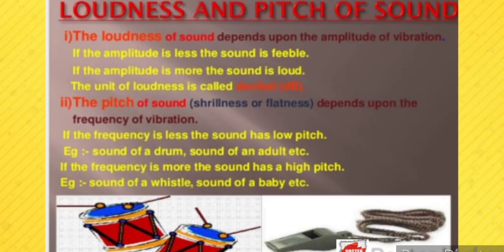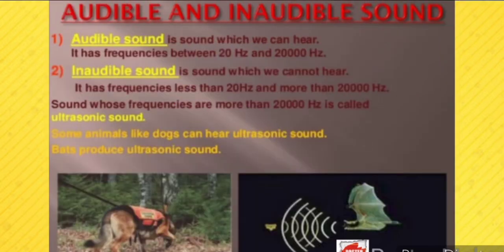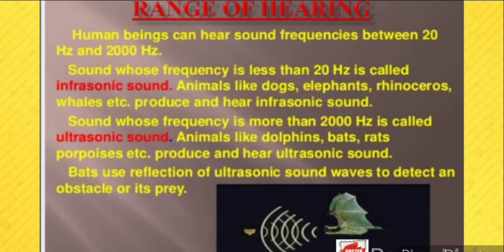Audible sound is sound which we can hear; it has frequencies between 20 Hz and 20,000 Hz. Inaudible sound is sound which we cannot hear; it has frequencies less than 20 Hz or more than 20,000 Hz. Sound with frequencies above 20,000 Hz is called ultrasonic sound. Some animals like dogs can hear ultrasonic sound, and bats produce ultrasonic sounds.